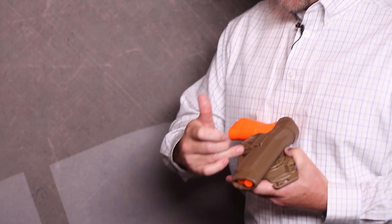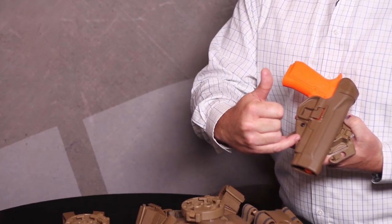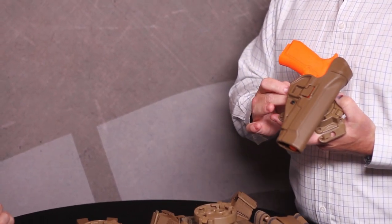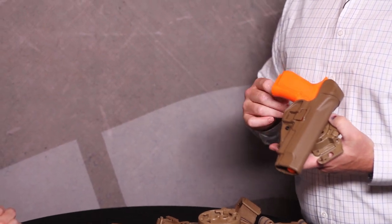There's some other retention. Yes, there is a secondary passive retention tension screw here. So you can actually tighten down the fit of the holster. We do have a hole here for high risk situations where you can put a bungee cord up over the top. You can tether it.